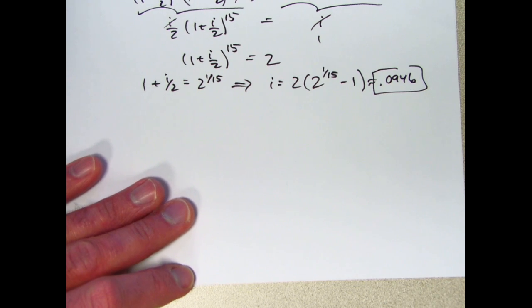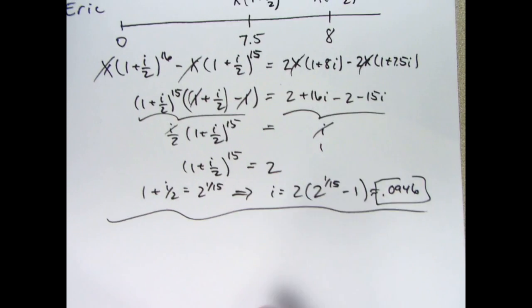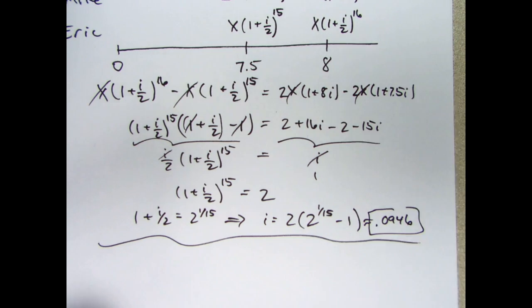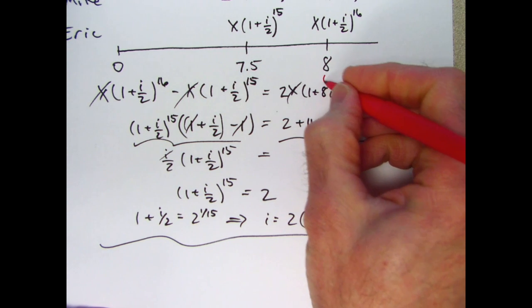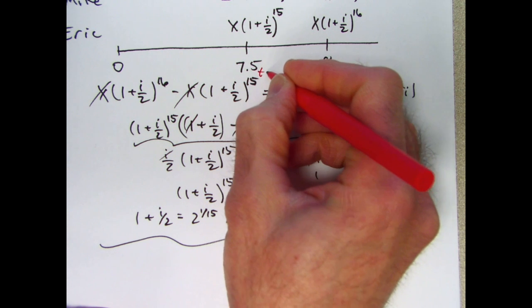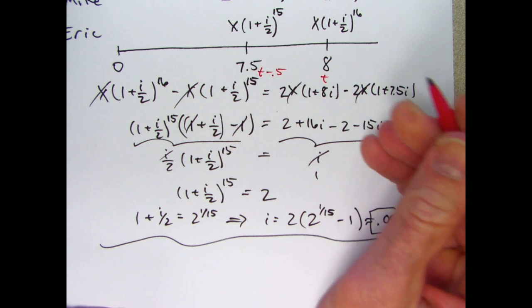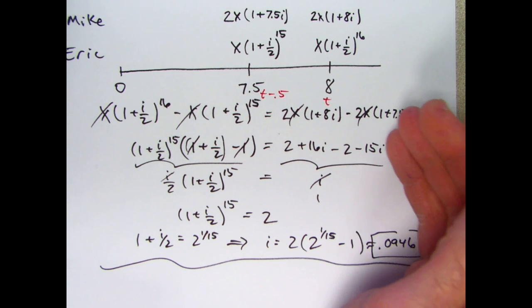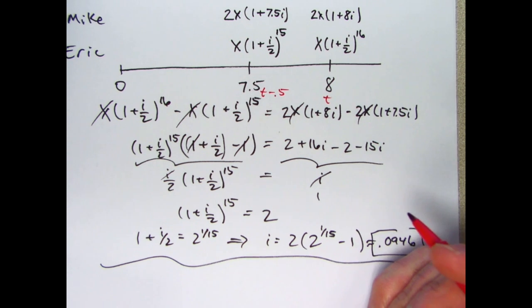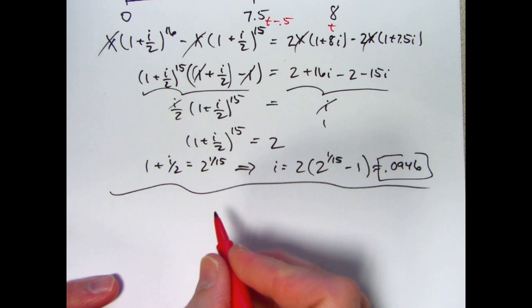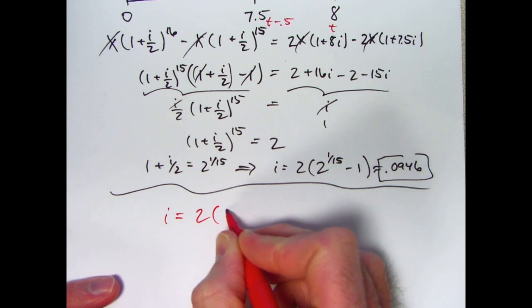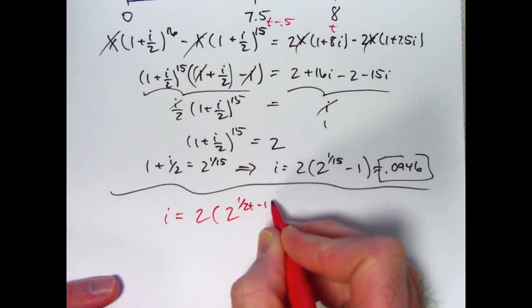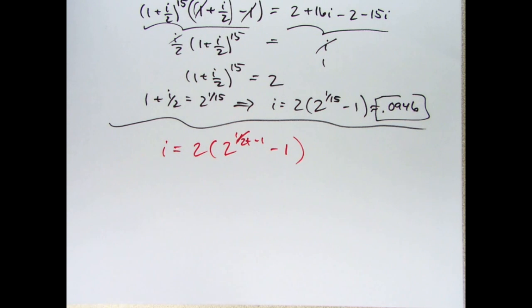What about this generalization idea? I considered the same kind of situation, except instead of saying it's the 8th year, I called it the Tth year. This would be time T, and this would be time T minus 0.5. This would represent a situation where the amount of interest they get is the same in the last half of the Tth year. The derivation of trying to solve for i was pretty similar. And what I got in the end, and you should check that on your own, is this expression for the interest rate.